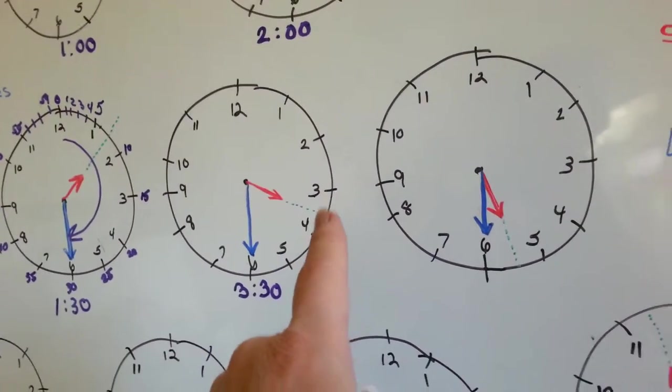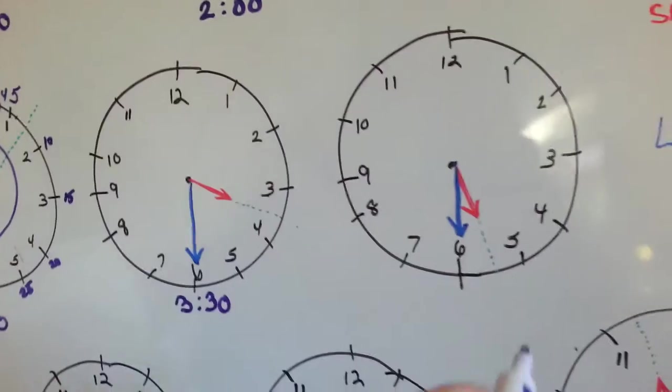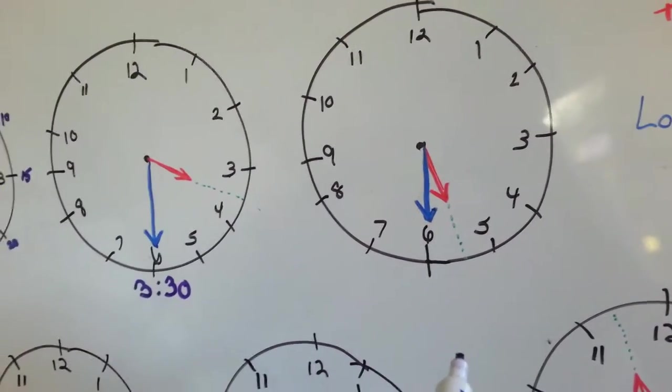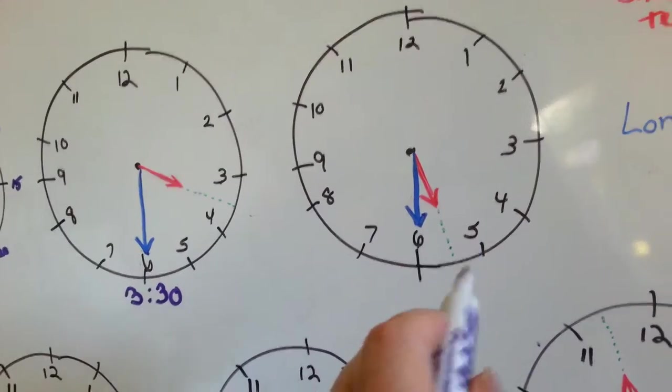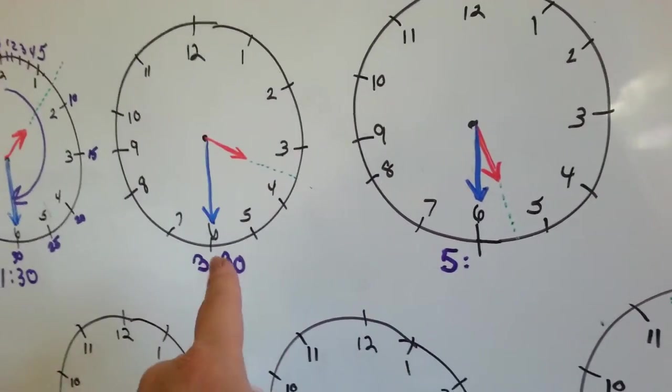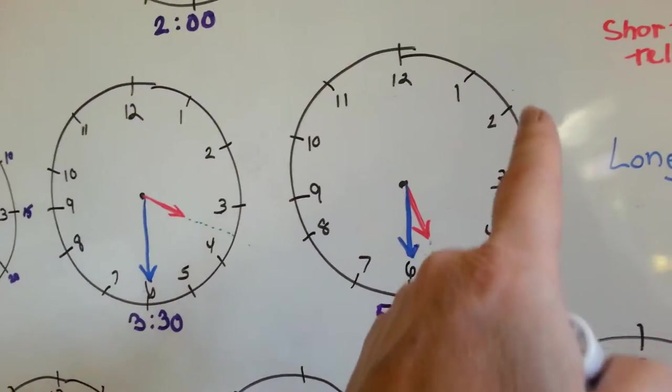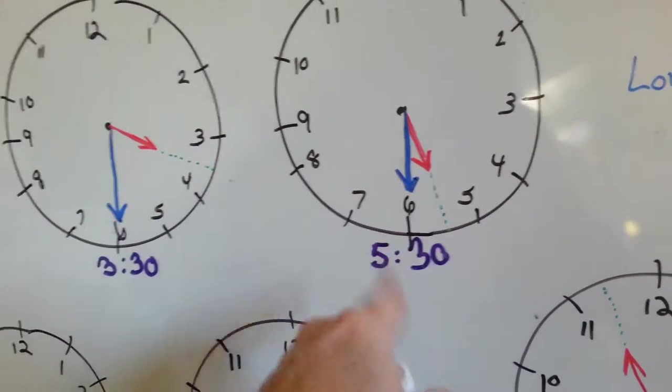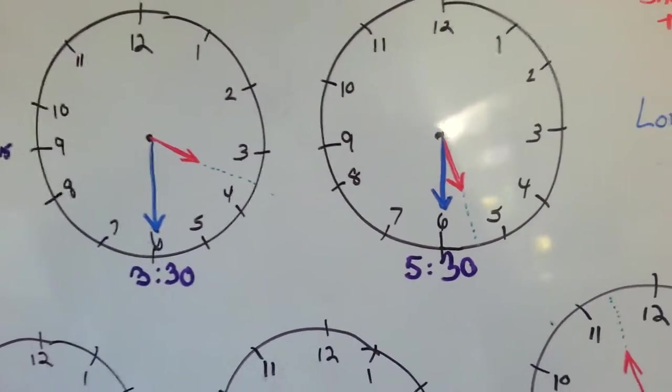Remember, you always go with the smaller number when it's in the middle of two numbers. Now it's in between the 5 and the 6. Which one's the smaller number? The 5. So we know it's going to start with a 5. It's pointing to the 6, which is 5, 10, 15, 20, 25, 30. That's 5:30 right there.